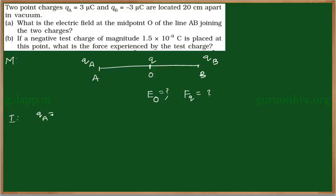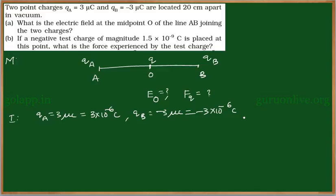The charge QA is equal to 3 microcoulomb, which can be written as 3 × 10⁻⁶ coulomb. The distance between the two charges D is equal to 20 centimeters, that is 20 × 10⁻² meters. The distance between A and O, considered as R, is equal to 10 × 10⁻² meters, or 10⁻¹ meters.